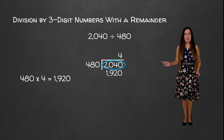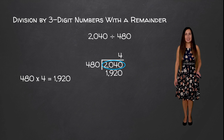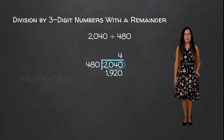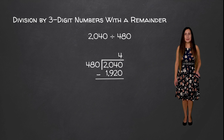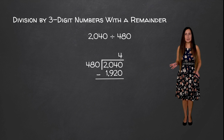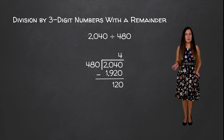We're going to write that value down here and we are going to subtract. 2040 minus 1920 is equal to 120.